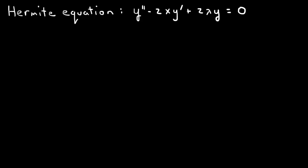Here I want to solve the Hermite equation and show how one can get polynomial solutions. The Hermite equation is y'' - 2xy' + 2λy = 0. We will see that for positive integer values of λ, we can obtain polynomial solutions.